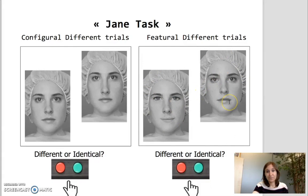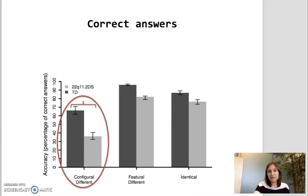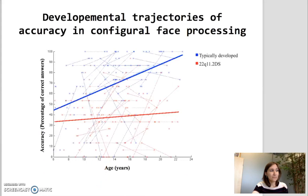Results reported in the current article are based on 75 participants with 22q11 deletion syndrome and 84 typically developed participants. Behavioral results, based on the accuracy of correct answers, showed that identifying changes on a configural level was difficult for both groups. However, this specific condition raised even more difficulties for participants with 22q11 deletion syndrome compared to the typically developed participants. Developmental trajectories show that these difficulties in configural face processing persist with age in participants with 22q11 deletion syndrome, while the typically developed participants improve this ability with age.